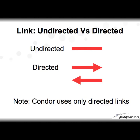A link can be undirected versus directed. Undirected means there are no arrows — it just assumes A is connected to B and B is connected to A. Directed makes it explicit: this node is connected to that node, or I emailed someone from me to that person and back. Condor uses only directed links, so we always know the directionality of where that link goes from and to.